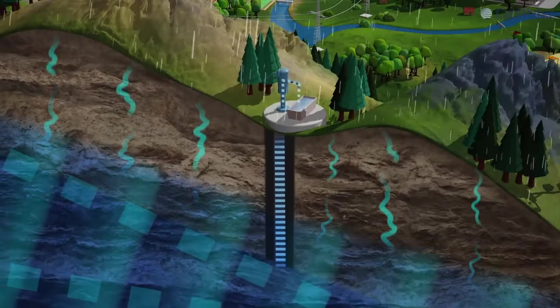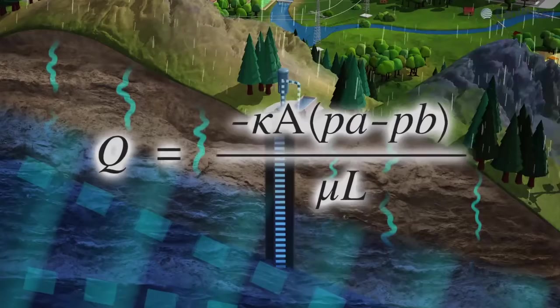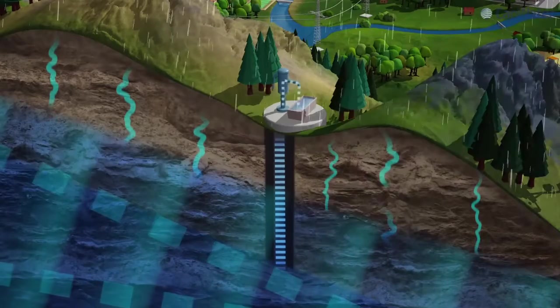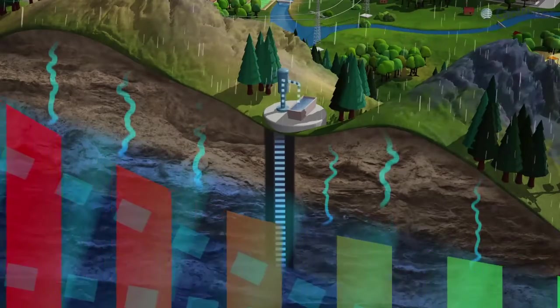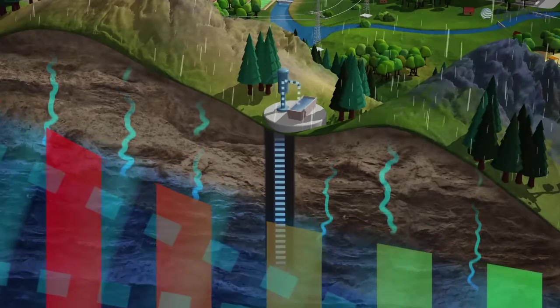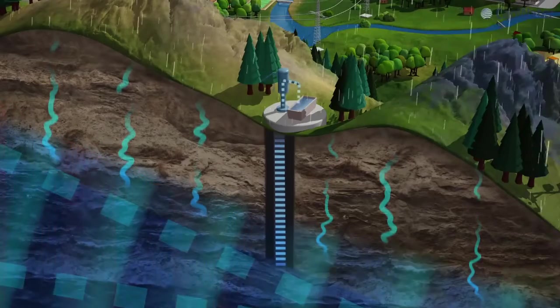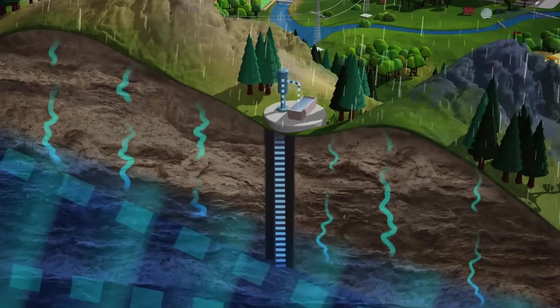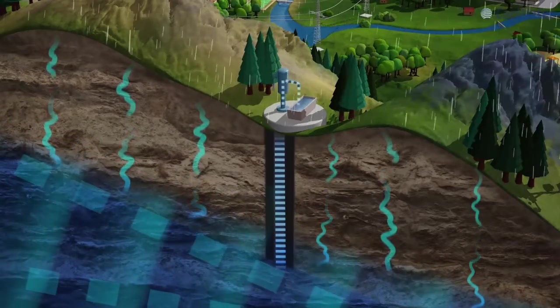Modeling groundwater systems is based on Darcy's law, which describes the movement of water in a saturated medium from an area of high potential or pressure to zones with a lower potential. Some models may also include chemical aspects of groundwater.